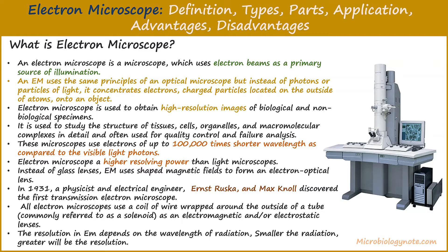Electron microscopes have higher resolving power than light microscopes. Instead of glass lenses, it uses shaped magnetic fields to form an electron optical lens. Electron microscopes are used to obtain high-resolution images of biological and non-biological specimens. They are used to study the structure of tissues, cells, organelles, and macromolecular complexes in detail, and are often used for quality control and failure analysis.